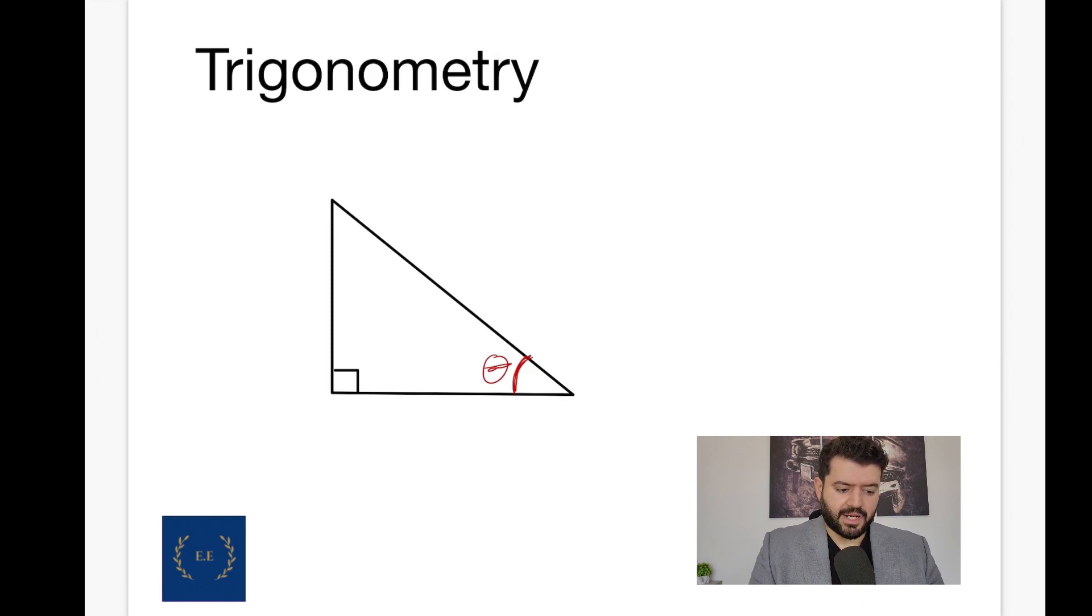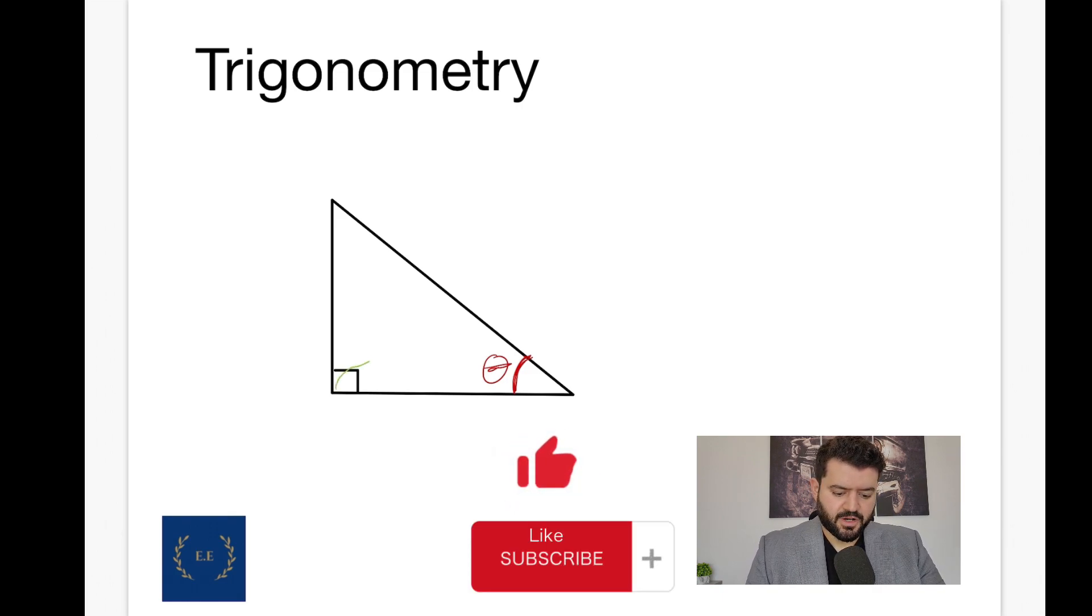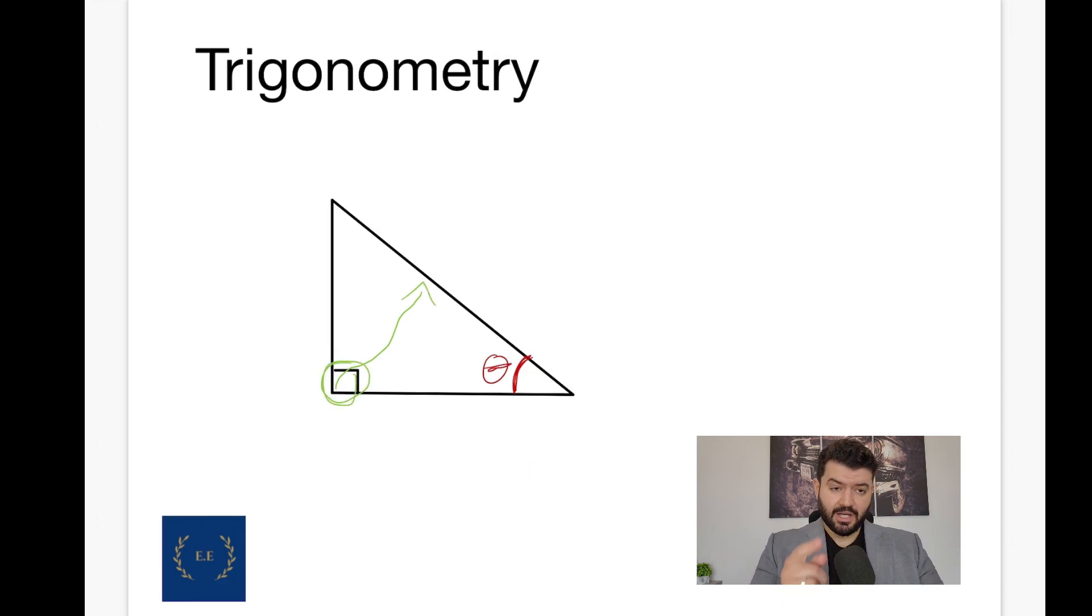Now, there are things to keep in mind. When I have a right angle triangle, every single side has a name. What are the names? Let's see. We're going to start with the side in front of the 90 degrees. If I have the 90 degree angle in front of me, take a look at the side in front of it. This is what we call the hypotenuse.